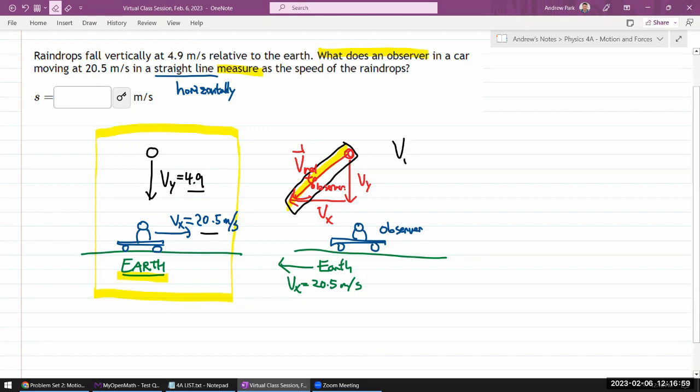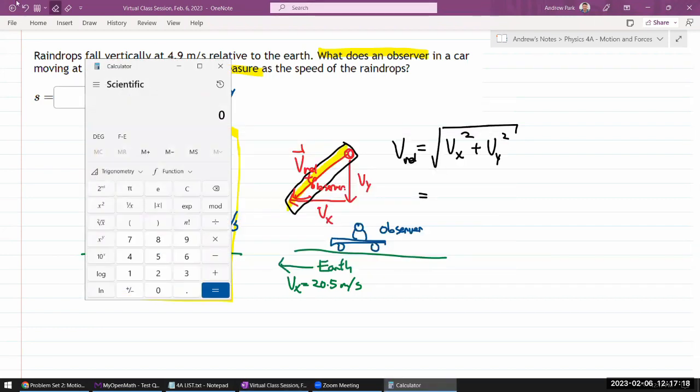The hypotenuse here, the magnitude of the speed of the raindrop is equal to square root of the square of the two legs. It's Vx squared plus Vy squared. So the answer here is, I guess it's the quickest to do it on a calculator, so let me do it that way. I do want to illustrate SageMath at some point, but maybe not today.